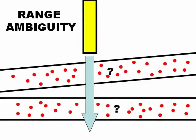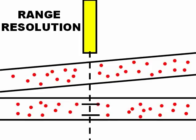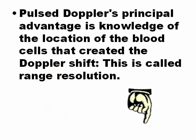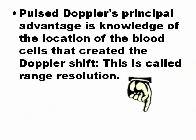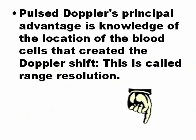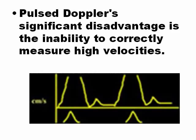On the contrary, with continuous Doppler this is Range Ambiguity — you don't know exactly where you are measuring. The principal advantage of Pulsed Doppler is Range Resolution. However, the disadvantage of Pulsed Doppler is an artifact called Aliasing.